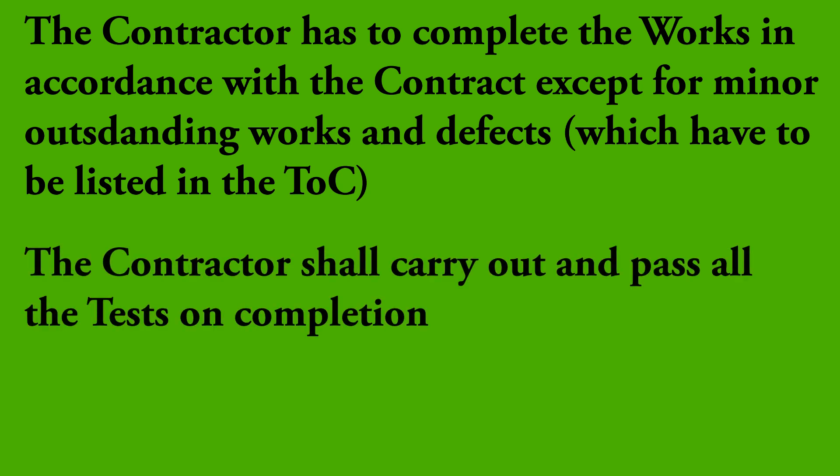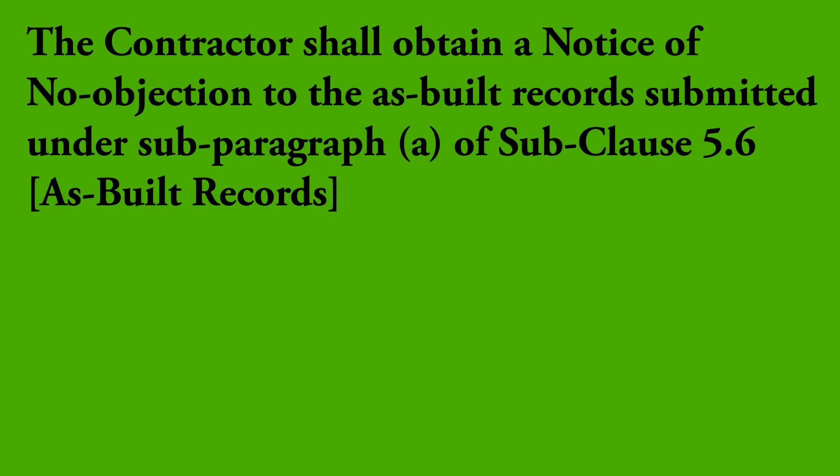The contractor shall carry out and pass all the tests on completion — and when I say contractor, this includes all sub-contractors, as the main contractor is responsible for them. Next, if the engineer has given or is deemed to have given a notice of no objection to the as-built records submitted under sub-paragraph A of sub-clause 5.6, As-Built Records, the as-built records for the works or section shall be submitted before the commencement of the tests on completion. These as-built records are not the final ones and must be updated for any changes occurring later, so the contractor must submit them and get no objection from the engineer before commencing tests.